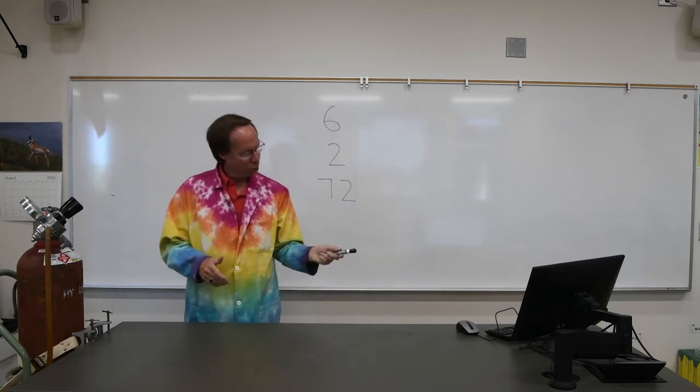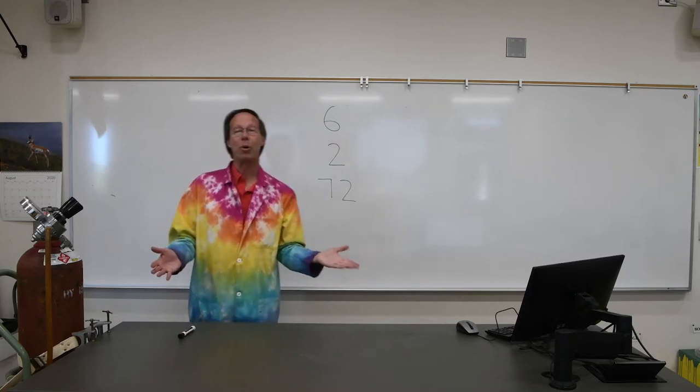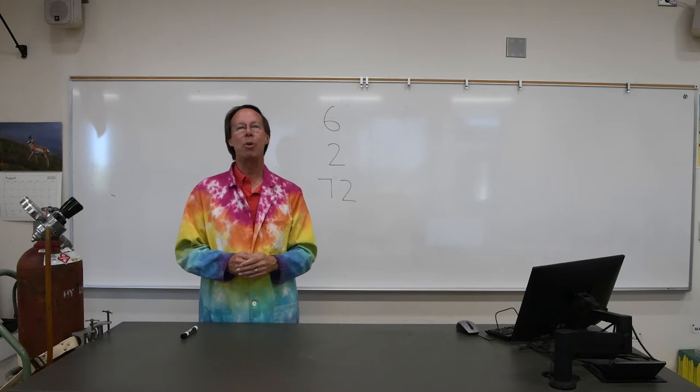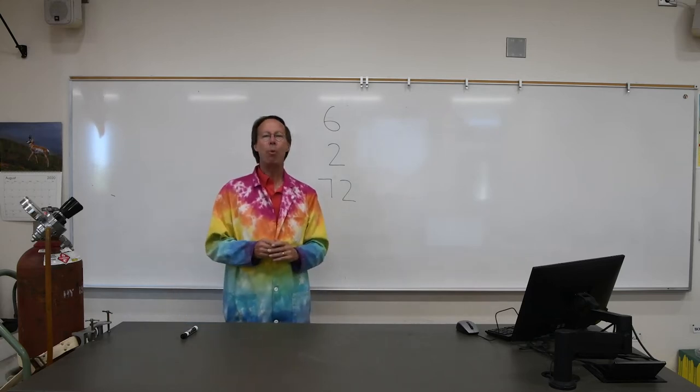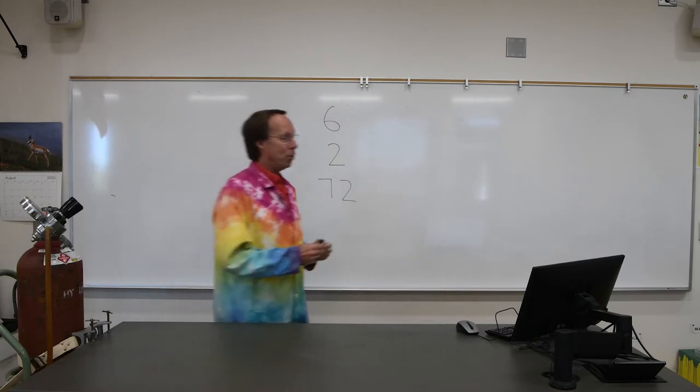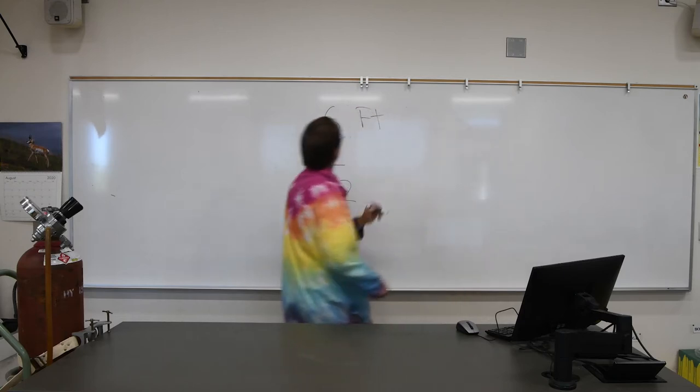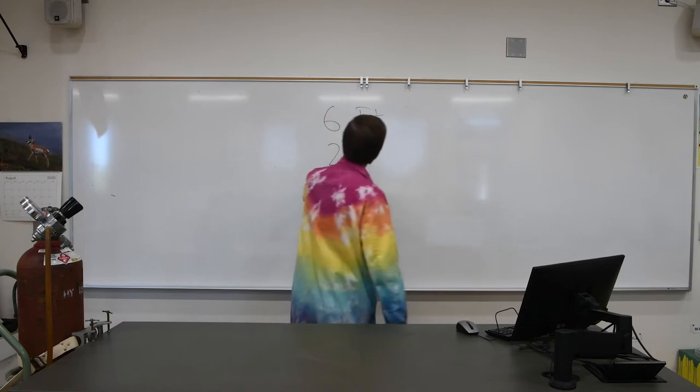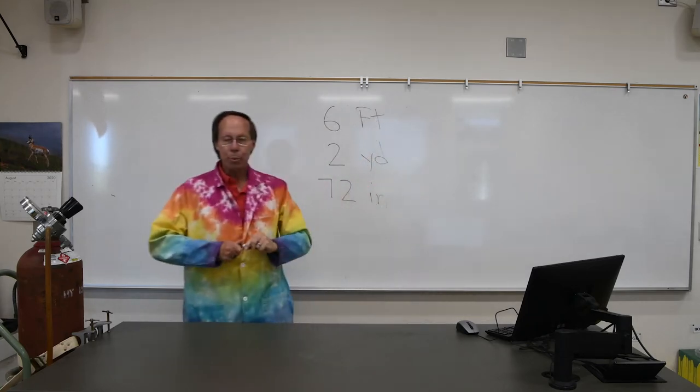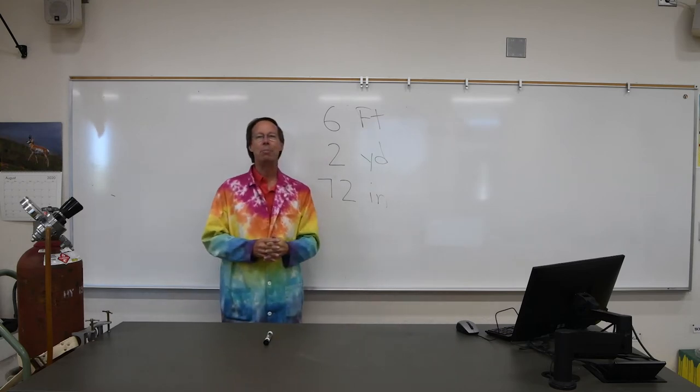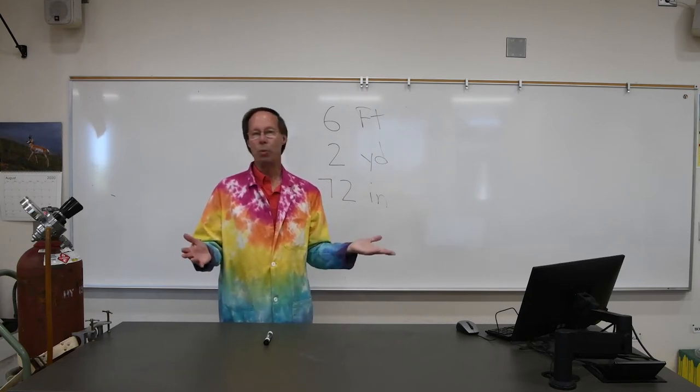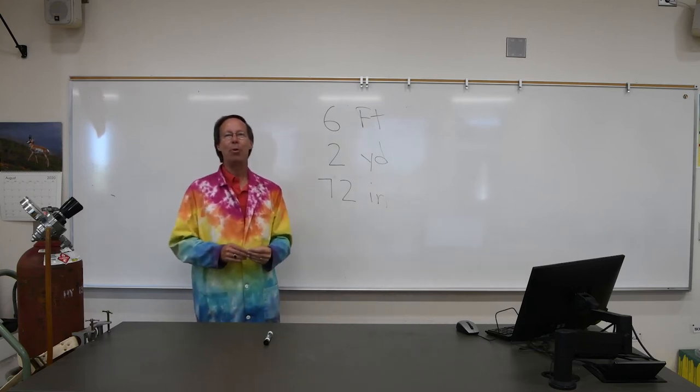So which of those is the correct length of the table? The answer is they're all correct, because the thing we left off of here was units. One of the things you're going to learn in this chapter is that it is very important whenever you make a measurement or you report a measurement, you have to have units. Otherwise, it's meaningless. Six what? Two what? Well, the table is actually six feet across. It's also two yards, and it's also 72 inches.